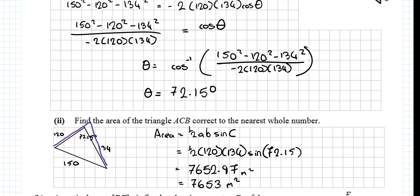So I can use these two sides and the angle between it. I could not use these two sides because I don't know the angle in the middle, and I could not use those two sides because I do not know the angle in the middle there either. So we have to use 120 and 134, and we're going to use the sine of 72.15, which we just found. A very easy question, giving your answer to the nearest whole number.